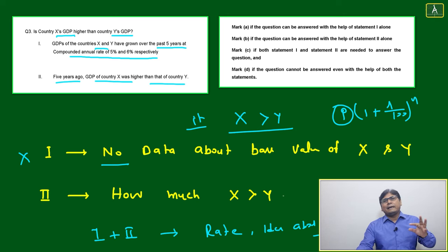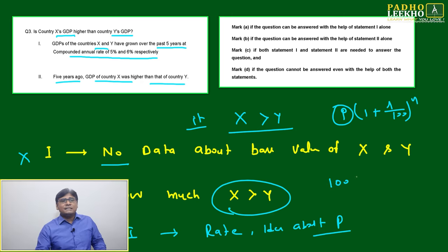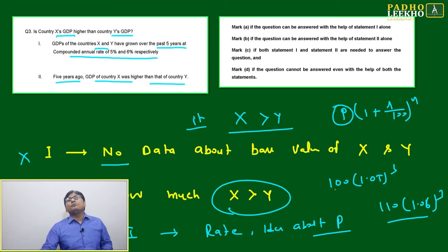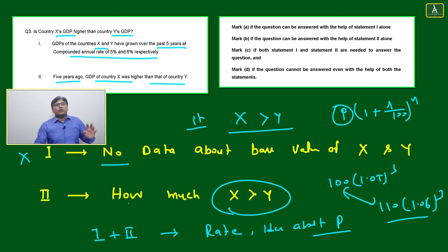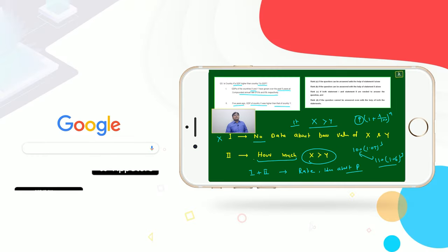But one question is there: five years ago GDP of country X was higher than country Y, but how much was it higher? For example, 100(1.05)^5 versus 110(1.06)^5 - which one will be more, which one will be less? It depends on what is the difference between these two. If difference is very less it will be compensated; if difference is more it will not be compensated. How much it is more matters.